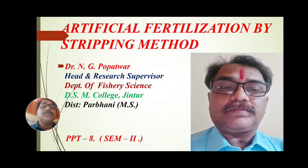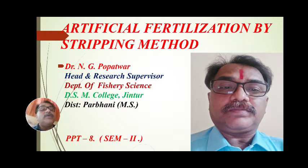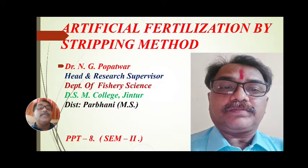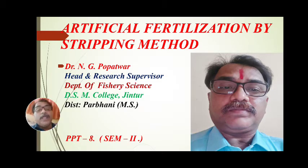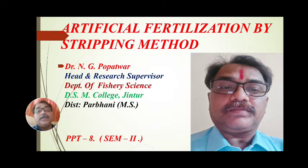Today we will see the third type of method. With the help of this method, we can produce good quality and large quantity of seed. Eggs are produced with the help of artificial fertilization by the stripping method. Fishes are fertilized artificially — the gametes are artificially removed and then fertilized in an artificial manner, producing a tremendous quantity of eggs within a short period of time.